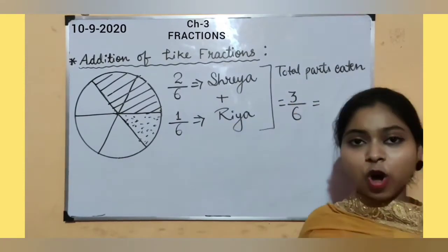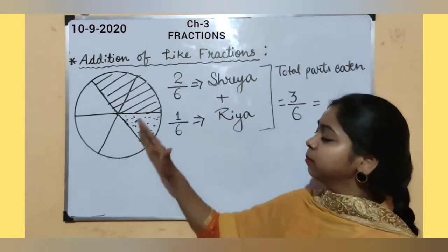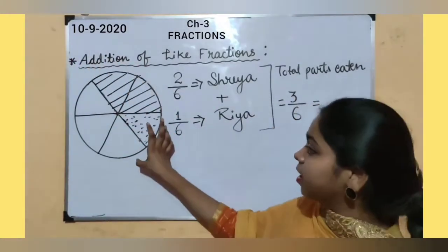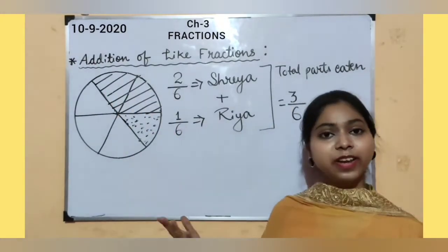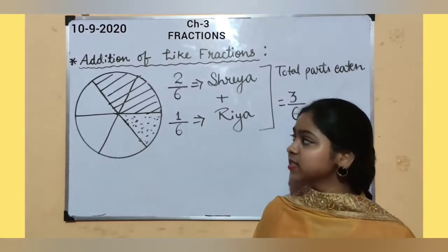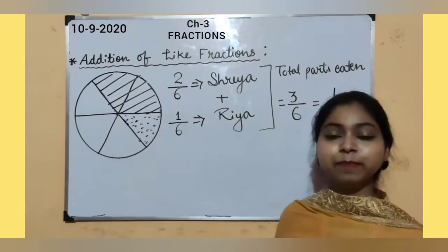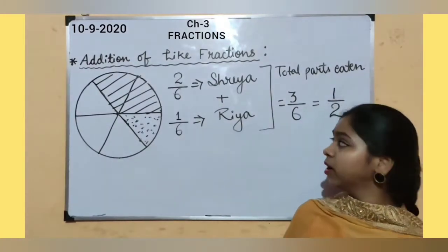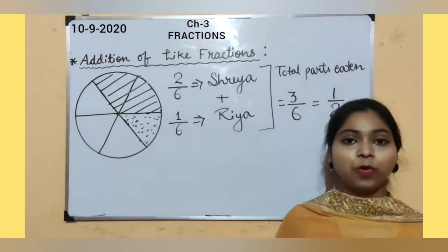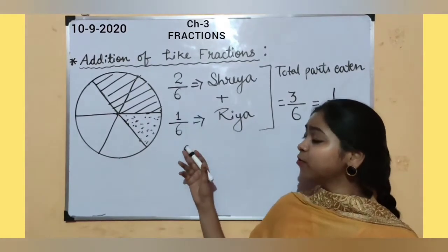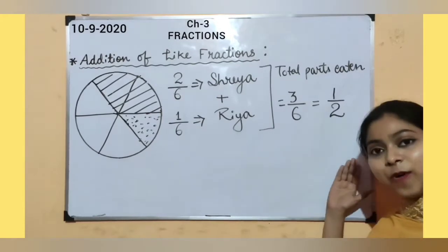Now one more thing you can observe here: in this given figure, the whole pizza — you can see the half of the pizza has been eaten by both the kids and half of this pizza has been left. So we can also say that half the pizza has been eaten by both the kids. So here is the lowest term of 3 upon 6. Now let's learn how to add both the like fractions in a written way and also to convert the answer to its lowest term.